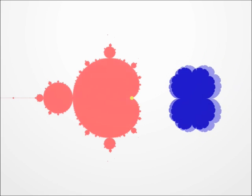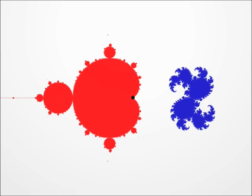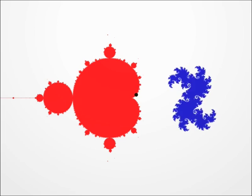In order to understand how these shapes change, I'll show you several things in parallel. On the left side, the red side, you can see a point that will start to move. This is the point c. On the right side, you see the corresponding Julia set. It's deforming as c slowly changes.